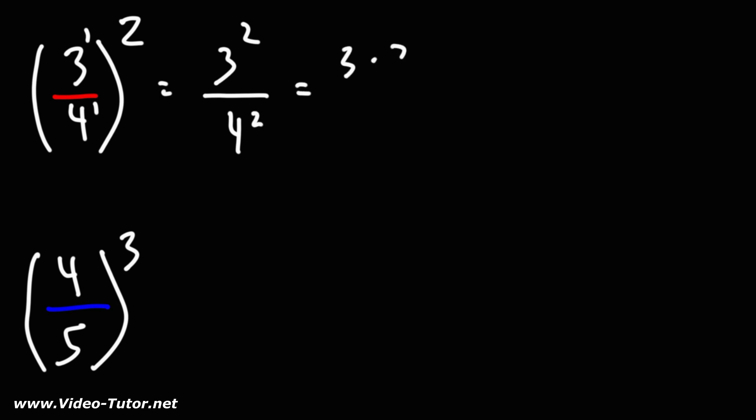3 squared is 3 times 3, 4 squared is 4 times 4. 3 times 3 is 9, 4 times 4 is 16, and so the answer is 9 over 16.